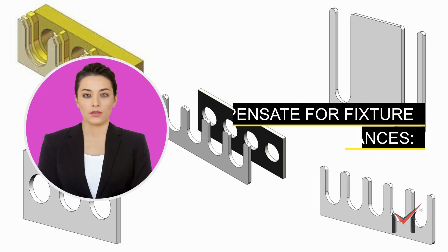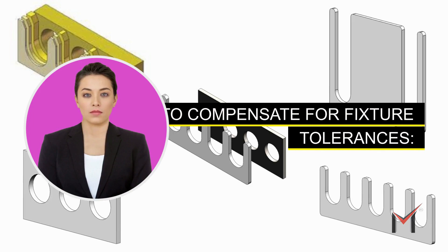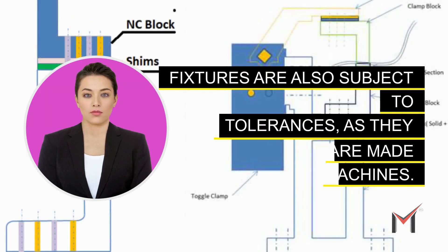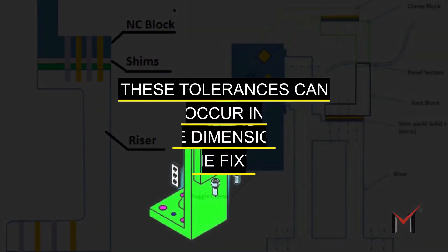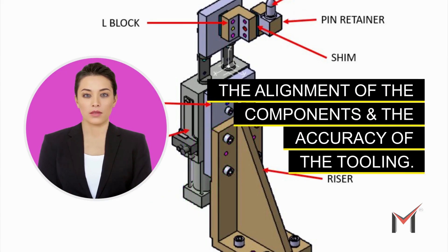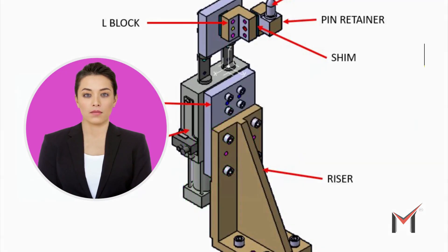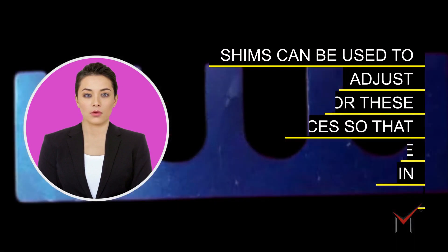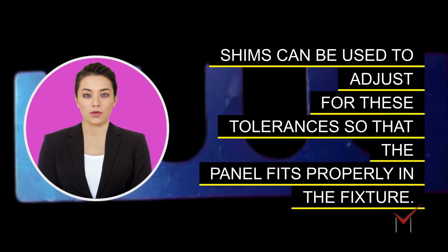To compensate for fixture tolerances: fixtures are also subject to tolerances as they are made by machines. These tolerances can occur in the dimensions of the fixture, the alignment of the components, and the accuracy of the tooling. Shims can be used to adjust for these tolerances so that the panel fits properly in the fixture.